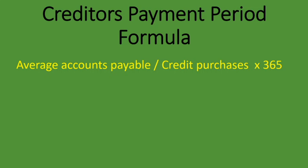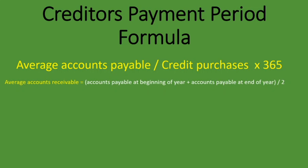Average accounts payable is calculated as accounts payable at the beginning of the year plus accounts payable at the end of the year, divided by two. Note that accounts payable at the beginning of the year is the same as accounts payable at the end of the previous year. Another way of calculating the creditors payment period is to take 365 days divided by the accounts payable turnover ratio, which should give you the exact same answer.